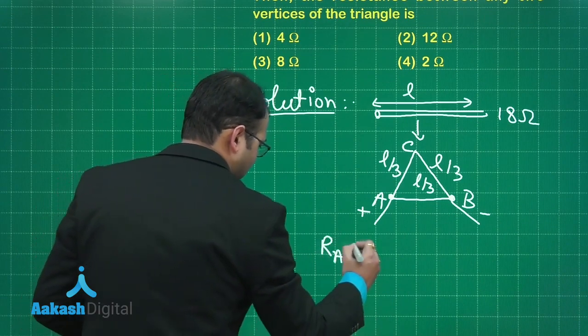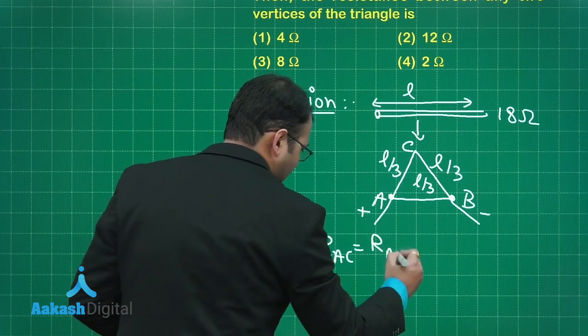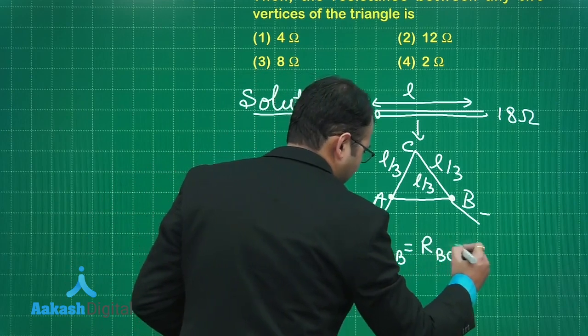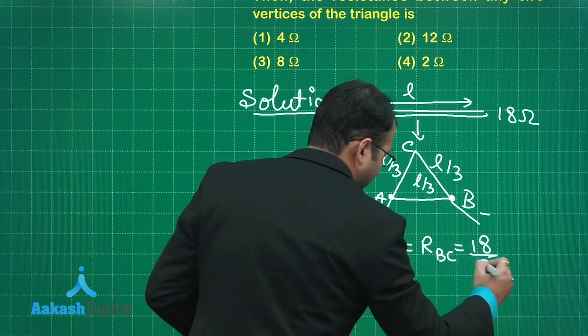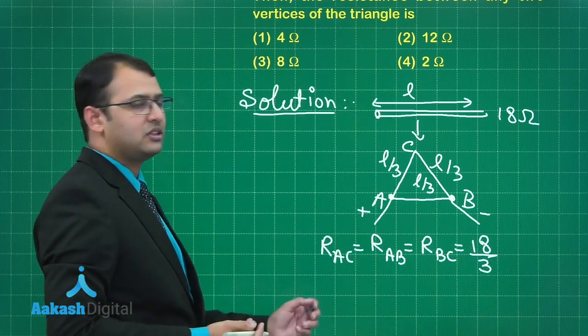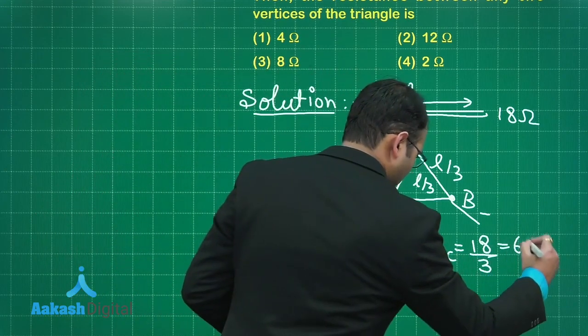Resistance of AC equals resistance of AB equals resistance of BC will be simply 18 by 3 as area of cross-section is remaining same, length is getting divided. So it is 6 ohm.